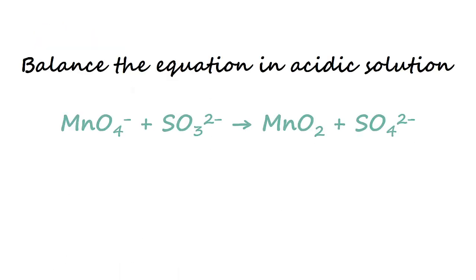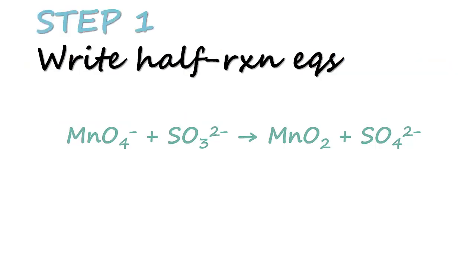So let's begin by balancing the equation in acidic solution. This is the given equation. The first step is to write out the half reaction equations. To do that we need to identify which component undergoes oxidation and which undergoes reduction by identifying the oxidation number. Here are the calculated oxidation numbers for each element.